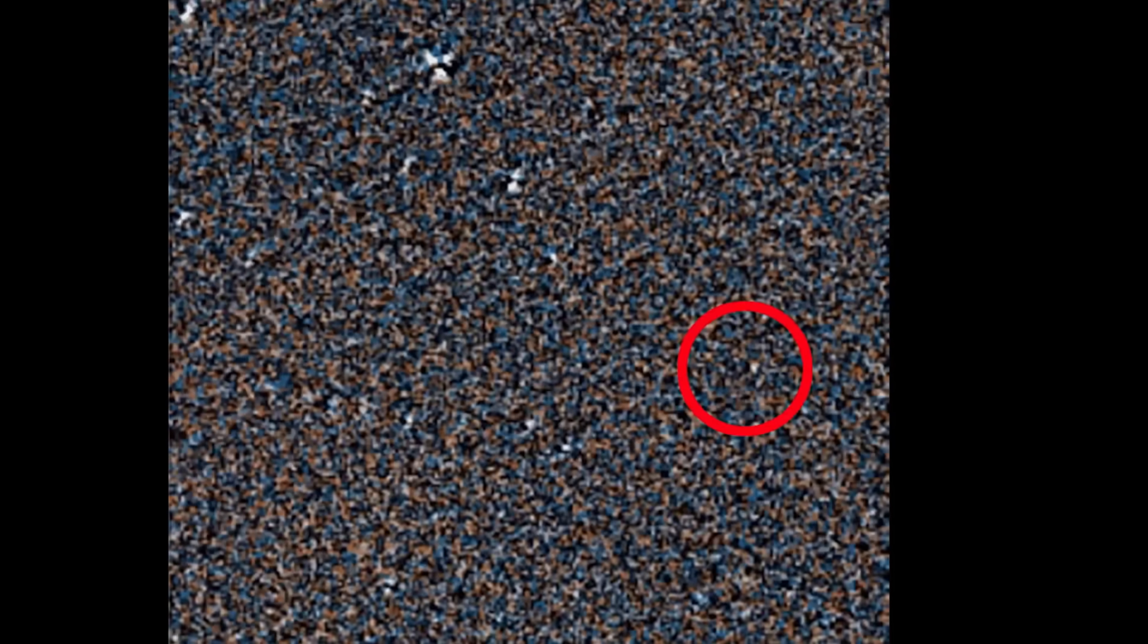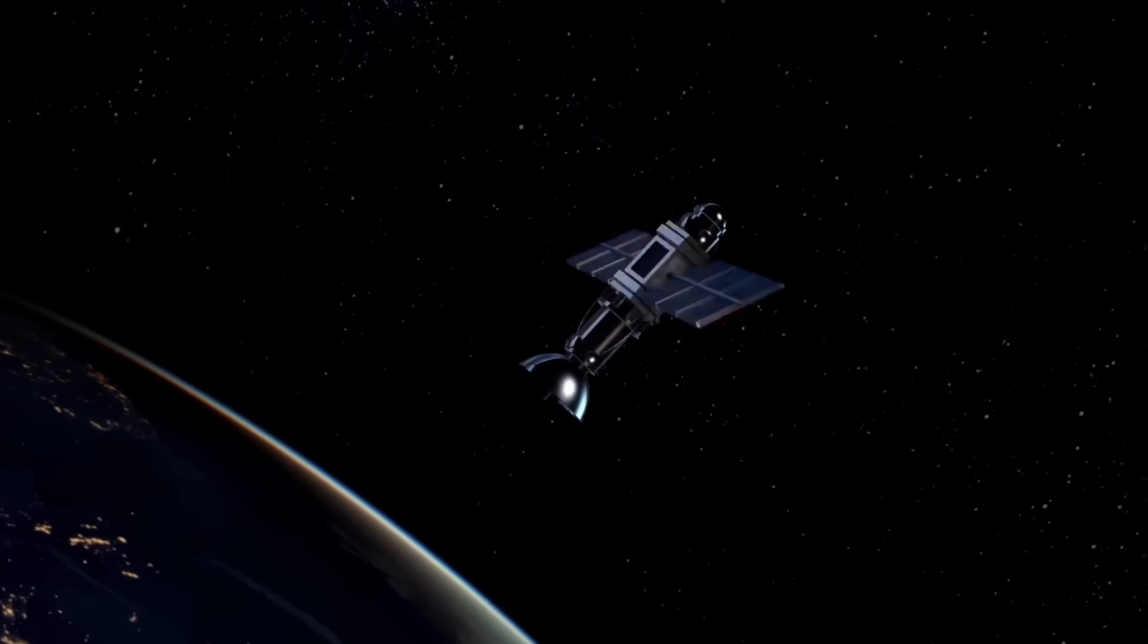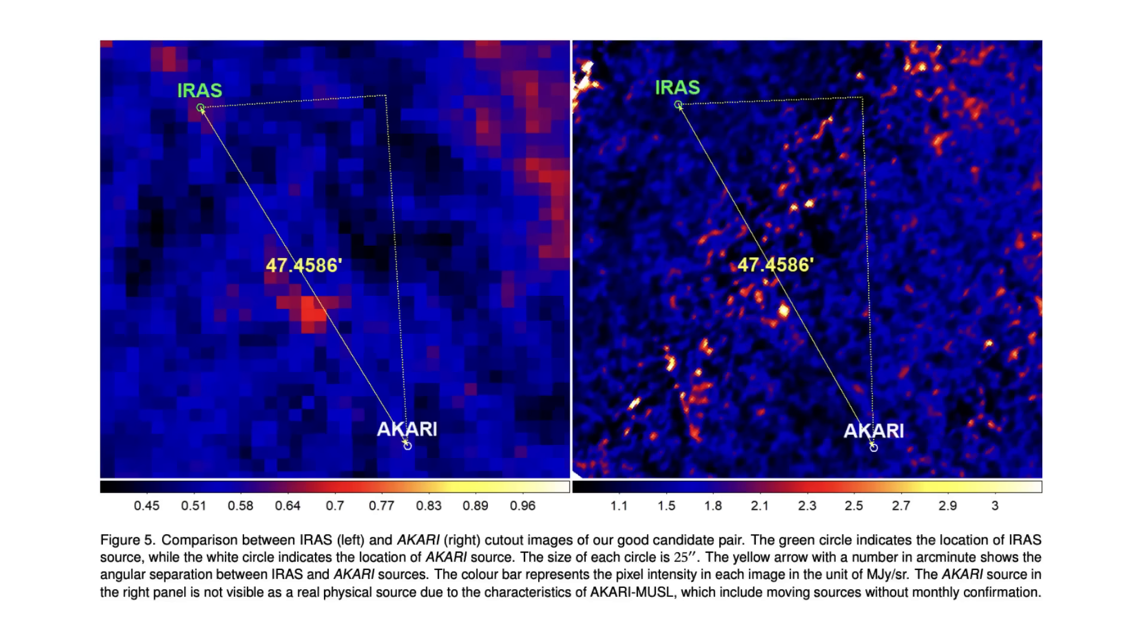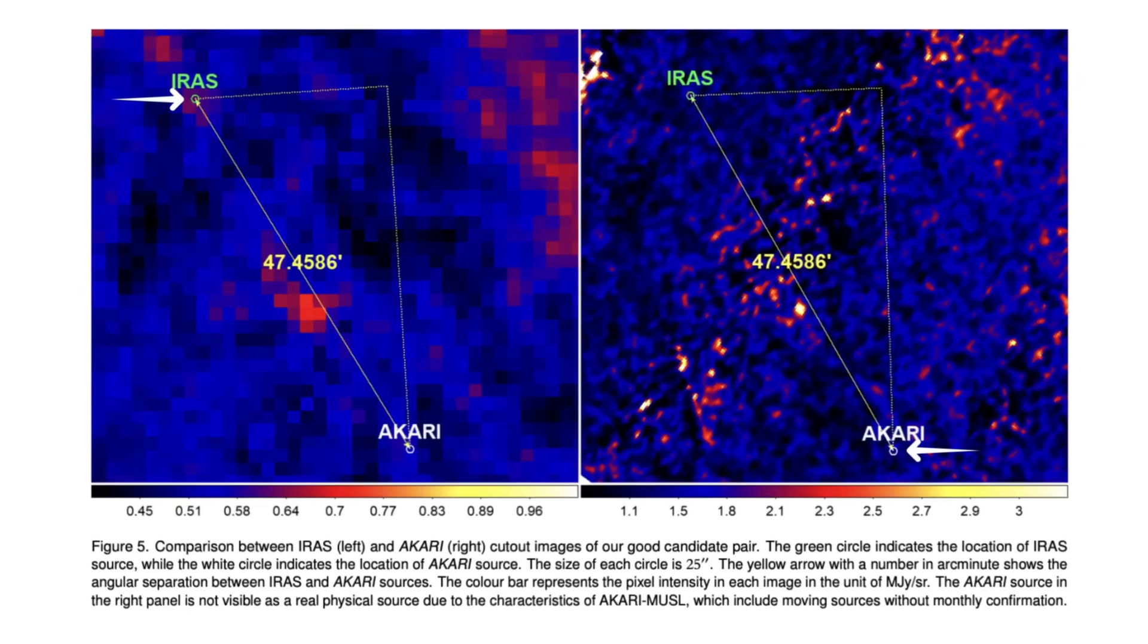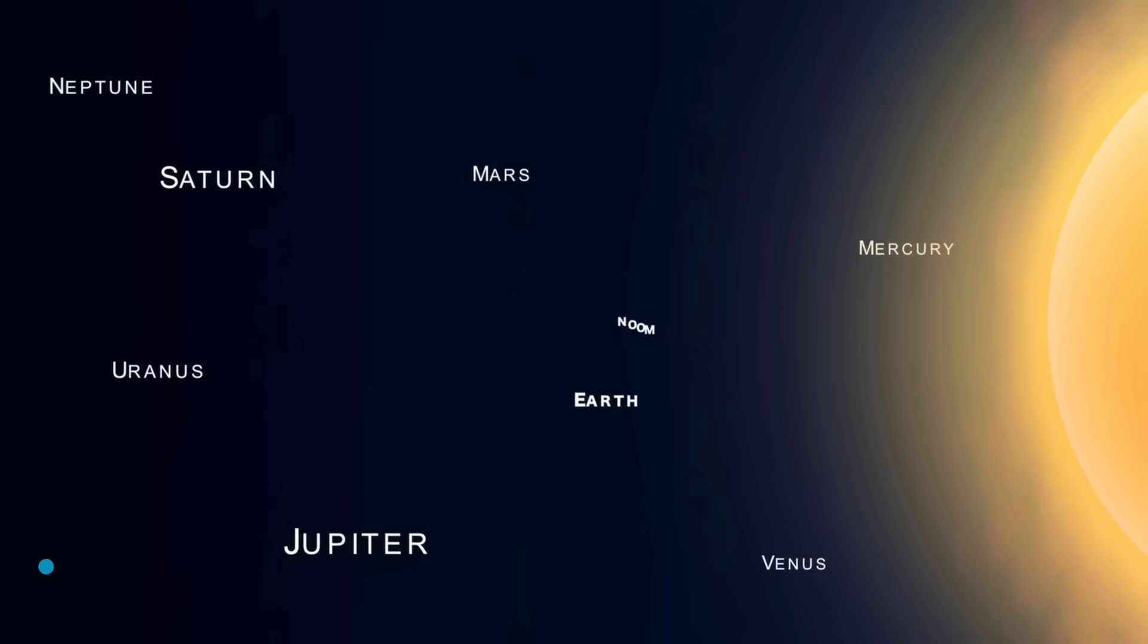It's just a tiny speck, a faint dot hidden in old telescope data from two sky surveys taken 23 years apart. And yet, this faint dot might be one of the biggest discoveries of our time. Because if this turns out to be what scientists think it is, it could be the long-rumored Planet 9.